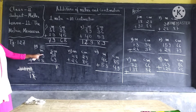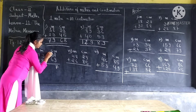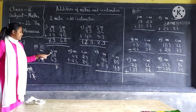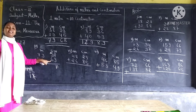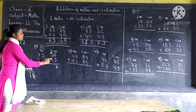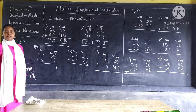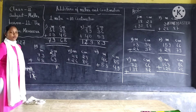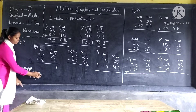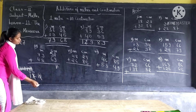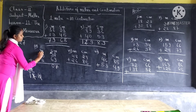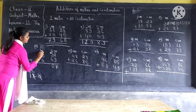Under tens we have one ten plus three tens plus six tens. Six plus three equals nine, and nine plus one equals ten. We cannot write ten, so this zero will come here under tens and this one will carry over and we will write it under the meter column.